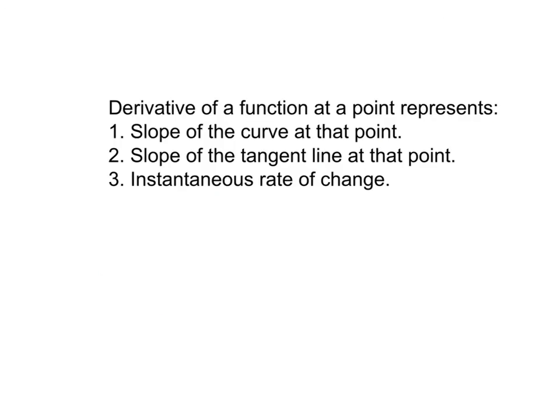So really, what you have to keep in mind is that the derivative of a function at a point represents three different things: the slope of the curve at that point, the slope of the tangent line at that point, and the instantaneous rate of change at that particular point. With this, we are now going to conclude this video. Make sure you are comfortable with the calculations we have done. We will do a couple more examples in class, and make sure you write down any questions you have. We will see you at our next class.